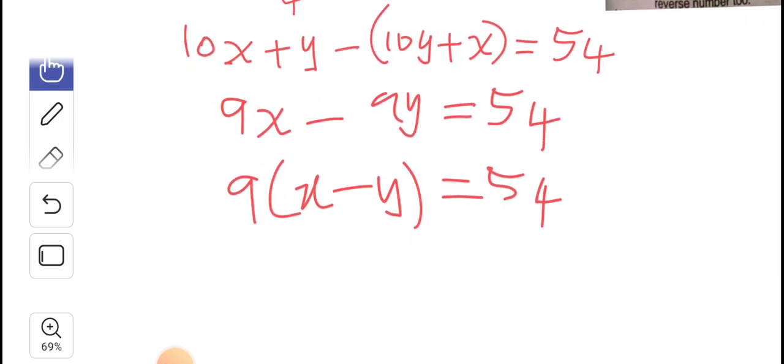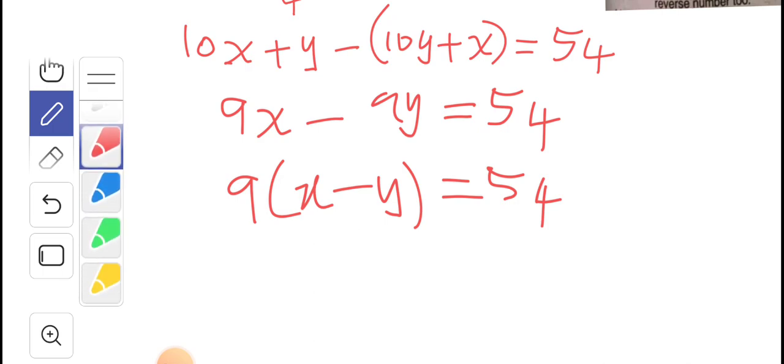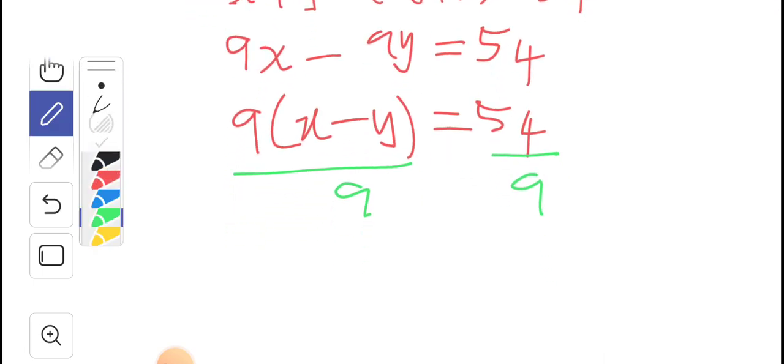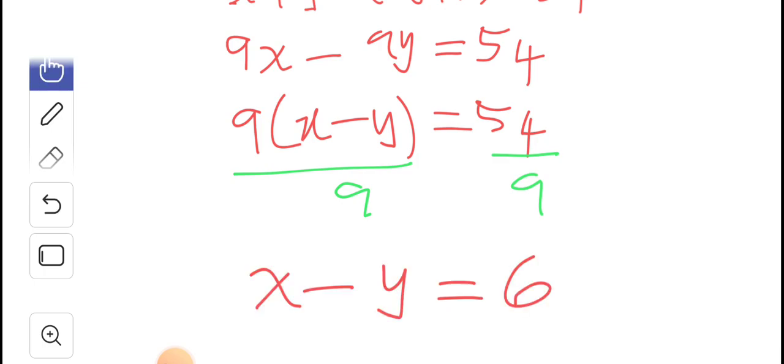Now, from this, then we divide through by 9. Okay, you divide by 9 here, divide by 9 there, both left and right. And what we're getting then is that x minus y is equal to 54 divided by 9, which is 6. Okay, so that is the answer there.